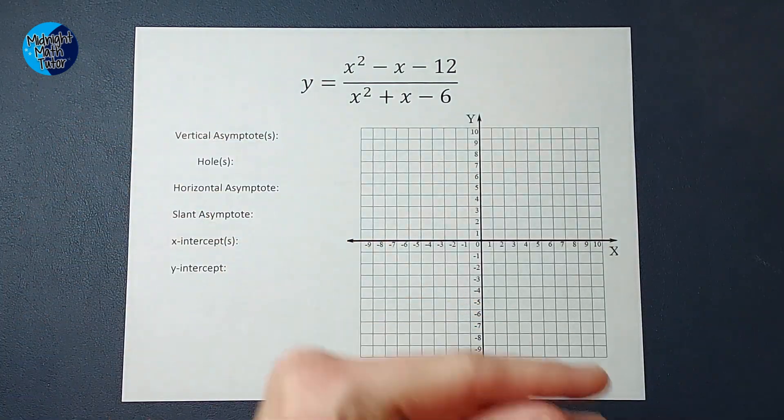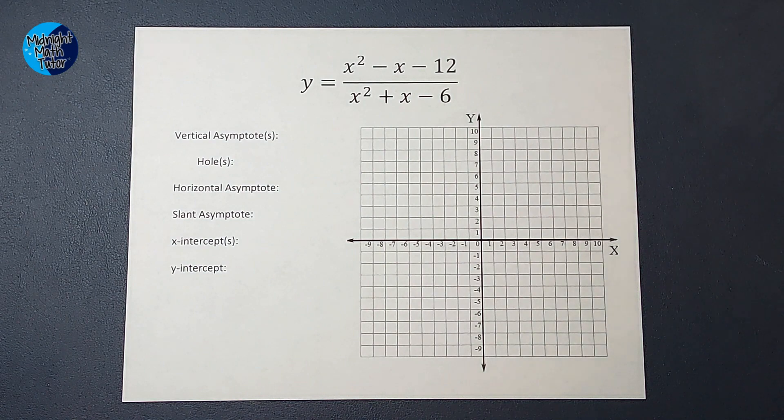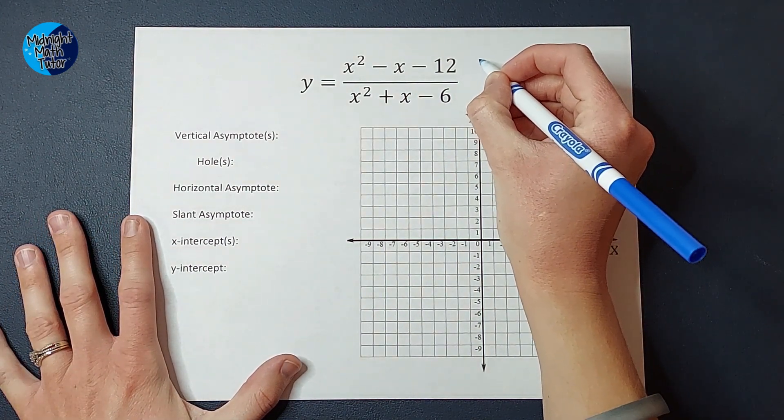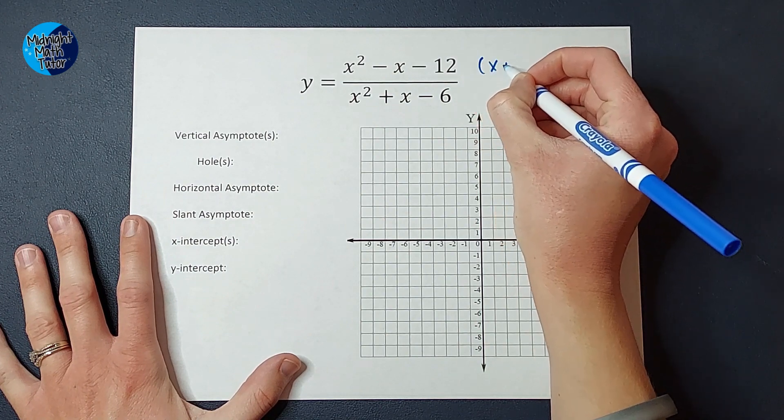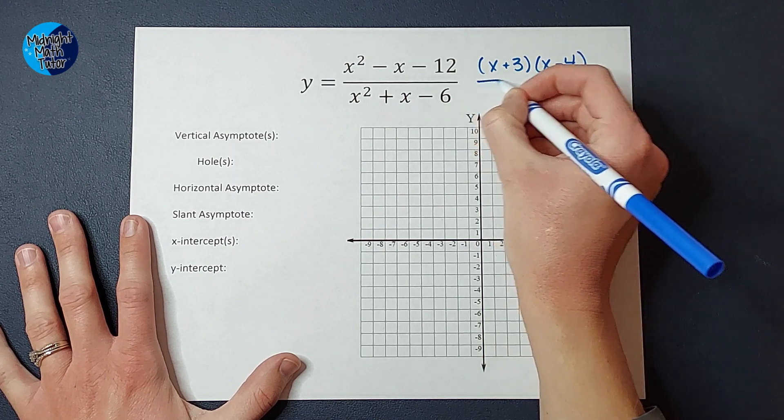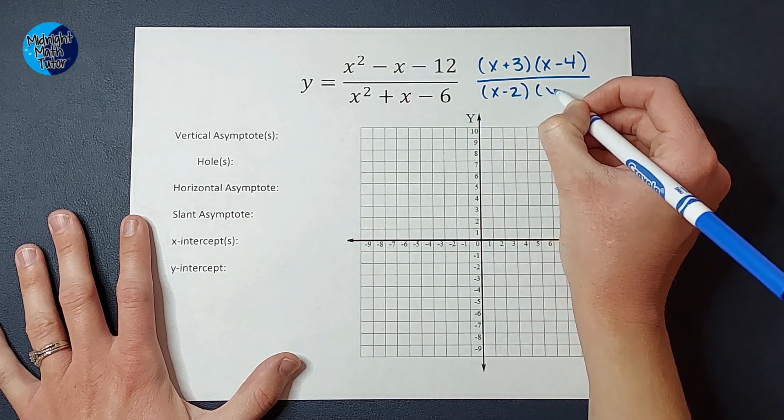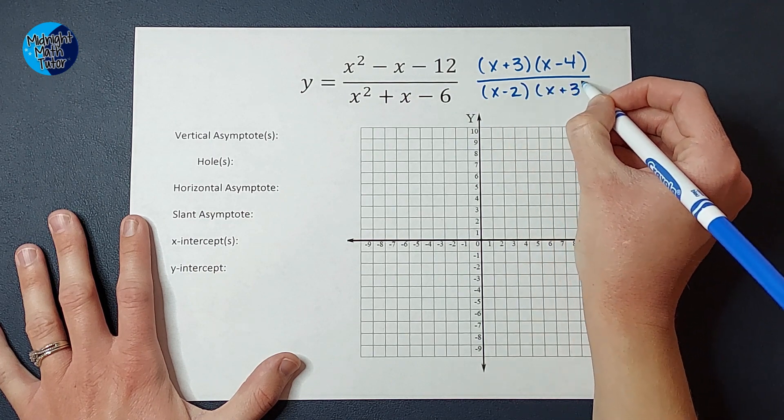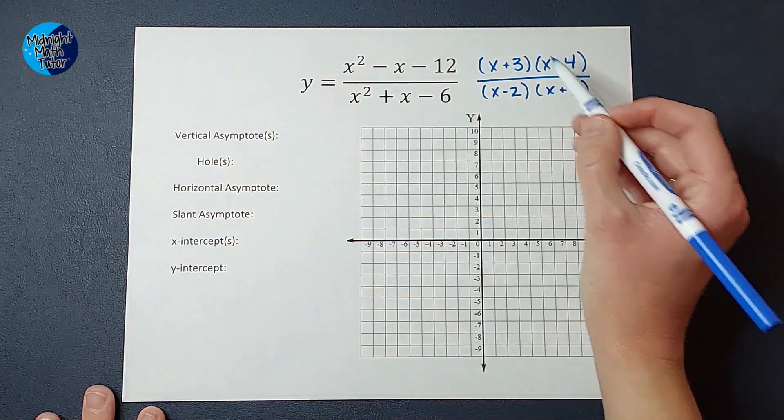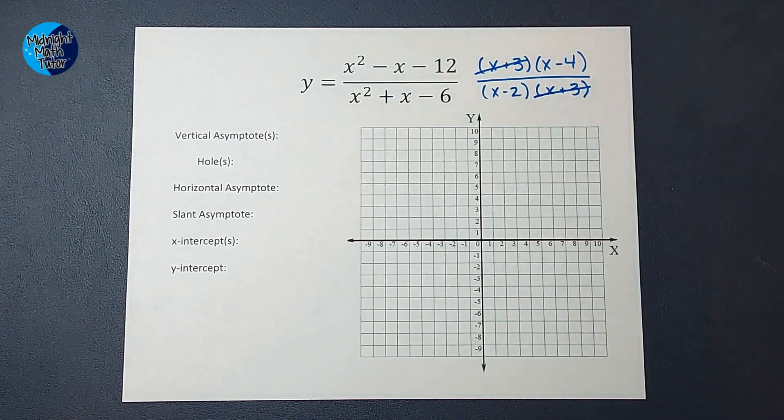All right. So first thing we're going to do is factor. I will link a factoring review video in the corner if you need it, but I'm just going to straight up tell you right now that this factors to x plus 3 times x minus 4 over x minus 2 times x plus 3. Now you might notice, oh hey, guess what? I love it when this happens that those x plus 3s can cancel, right? Everything's being multiplied. So those cancel each other out.